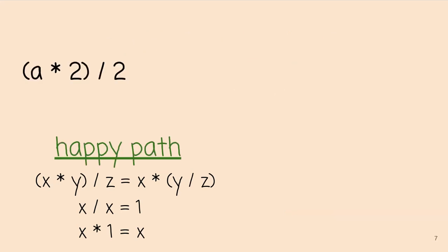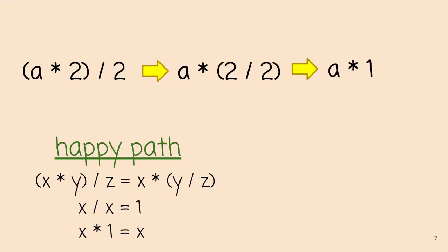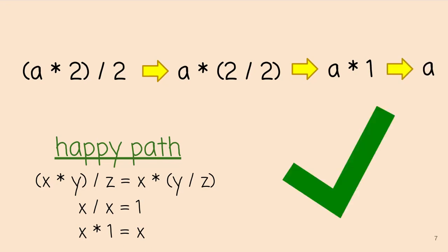If things are going right and you have the exact right rewrite rules in the exact right order, you apply a rewrite by looking for the left-hand side in the term, which generates a substitution, and apply it to get a new subterm. Here we're reassociating multiplication with division, which puts the two divided by two together. Then we can cancel that out — note this rule is unsound in general since x divided by x requires x to be non-zero, but two is non-zero here. Finally, we cancel the multiplication by one using the identity rule.